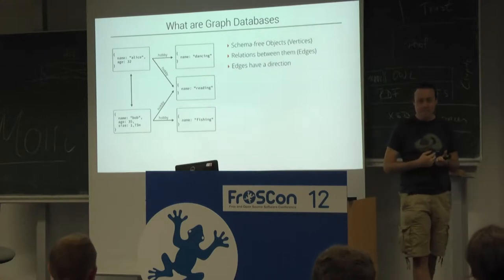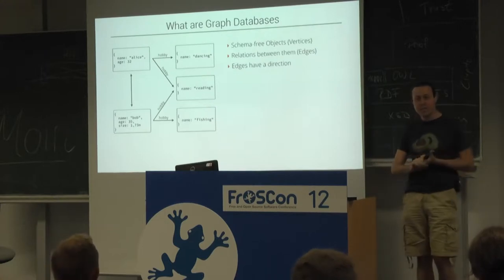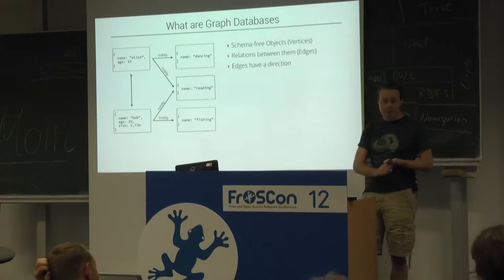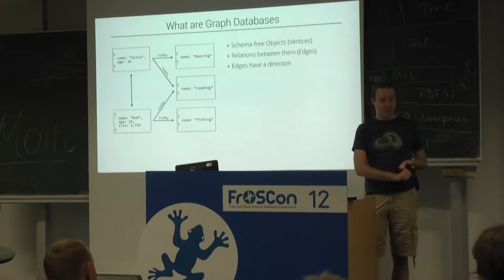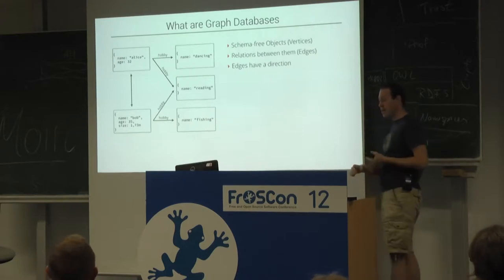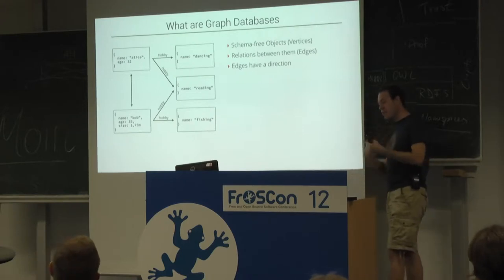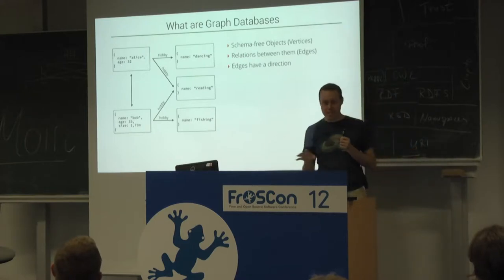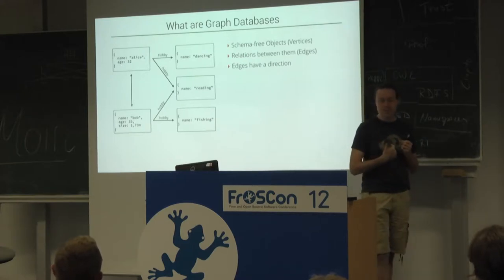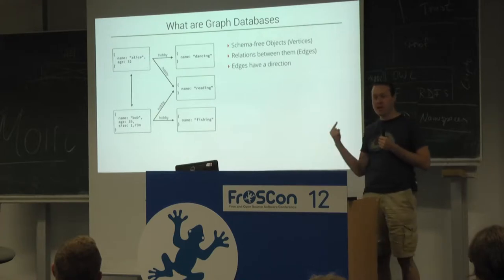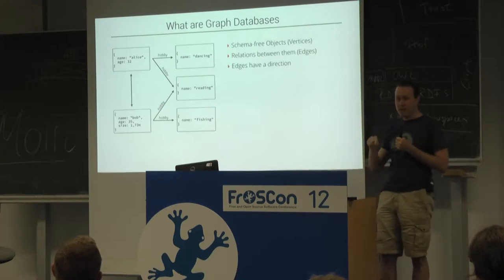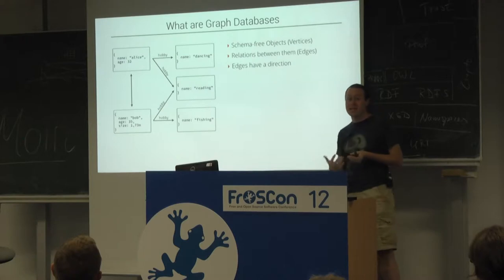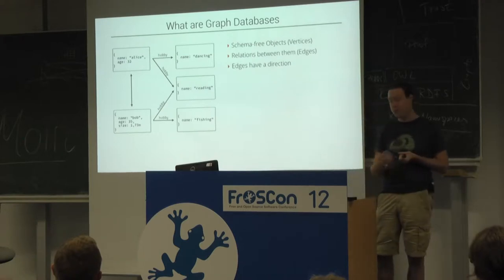So what are graph databases? Graph databases store so-called schema-free objects which they name vertices, and you can imagine them as one row in a relational table, with the difference that you do not say which attributes you have on each of those rows. So each of the vertices can have different attributes, if you like.